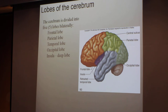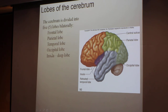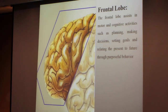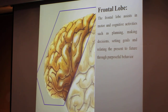The lobes of the cerebrum — it has five lobes. Some textbooks say four because they would consider the insula as a deep lobe, part of the temporal one. We'll go with five lobes: frontal, parietal, temporal, occipital, and insular. The frontal lobe assists in motor and cognitive activities such as planning, making decisions, setting goals, and relating the present to future thought — this kind of thoughtful conscience.